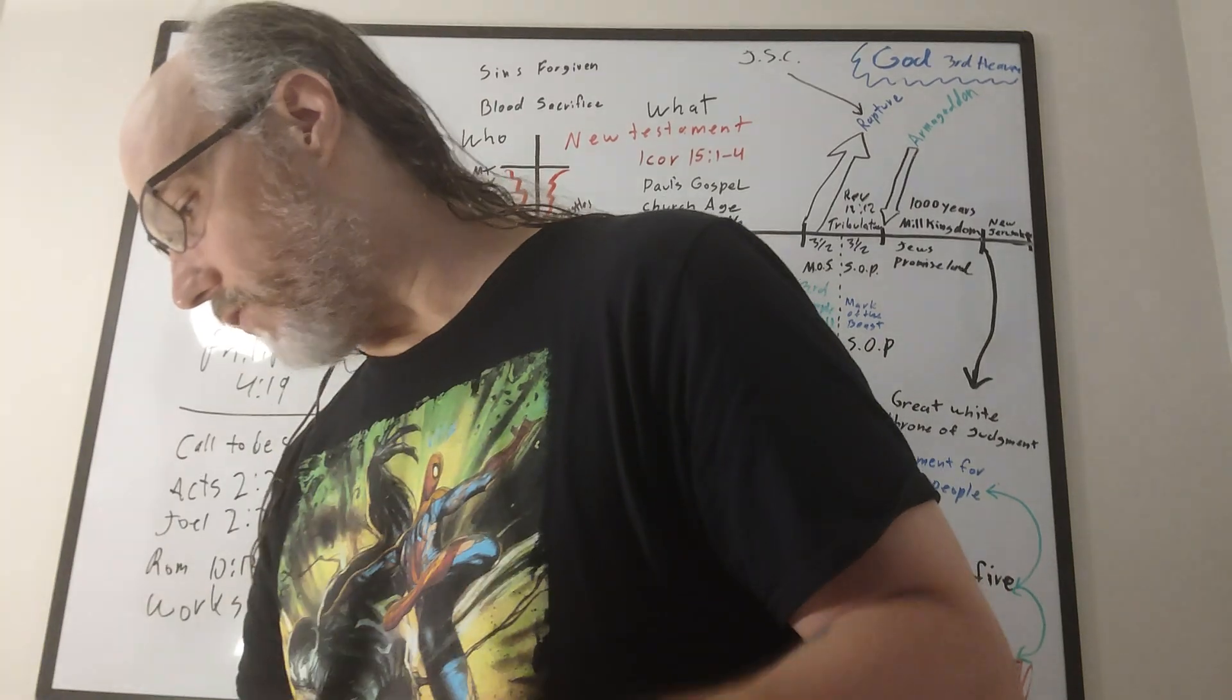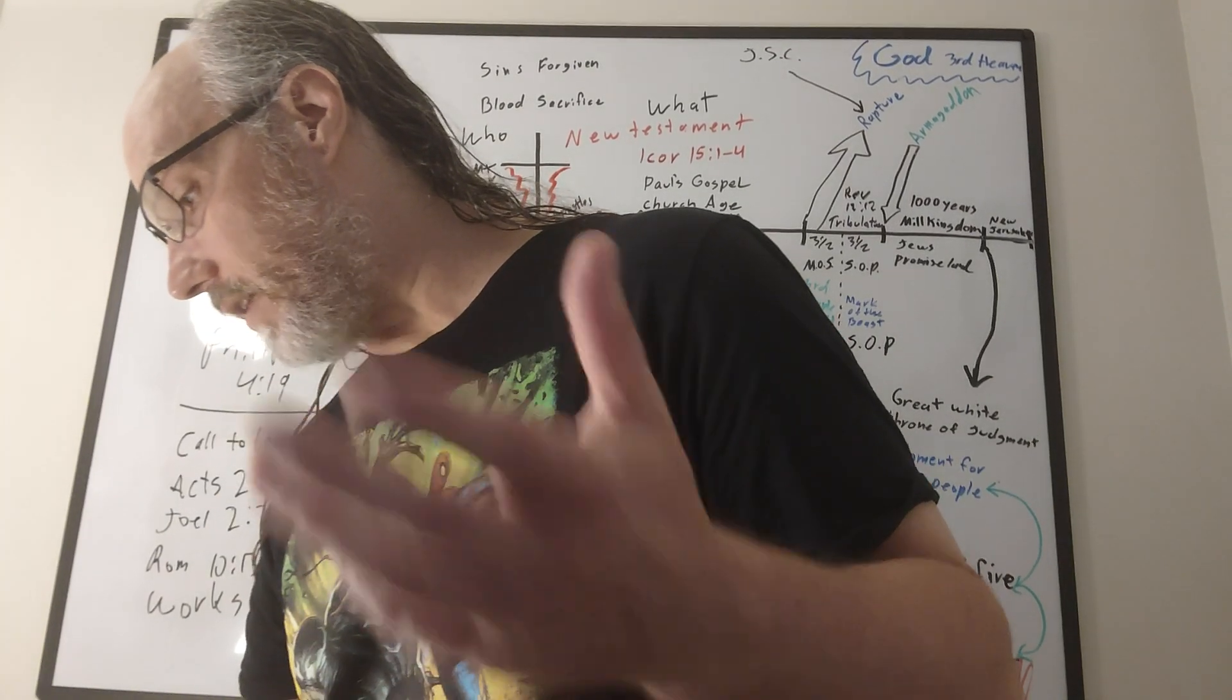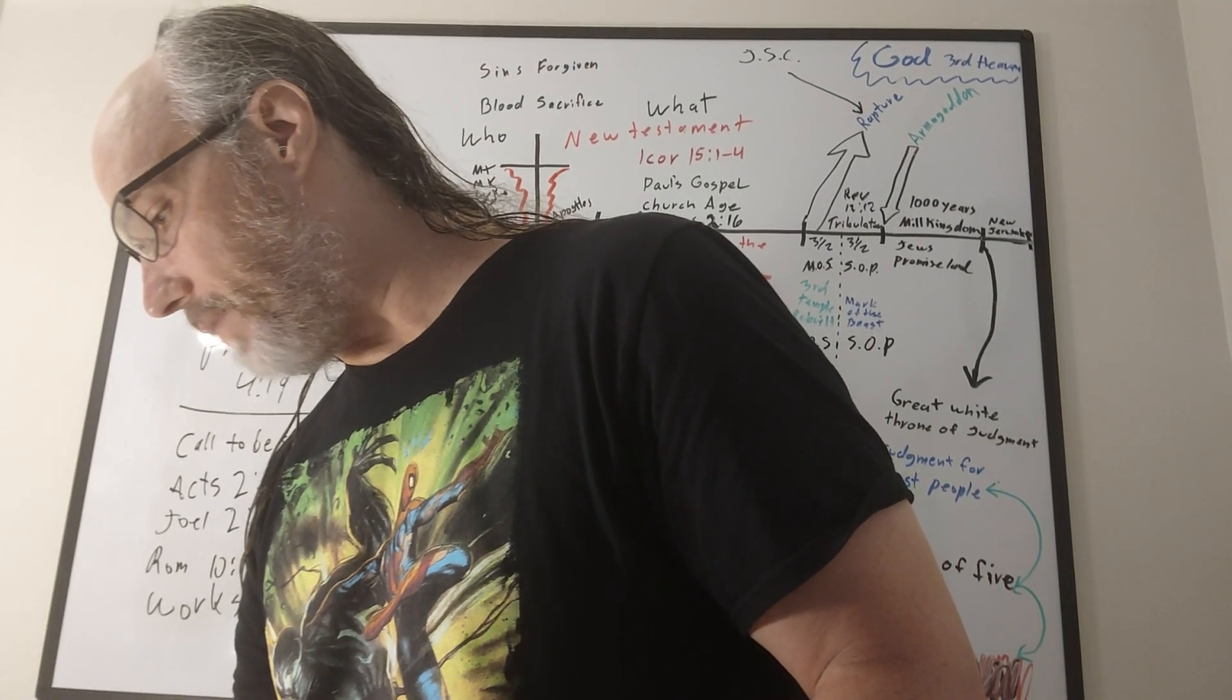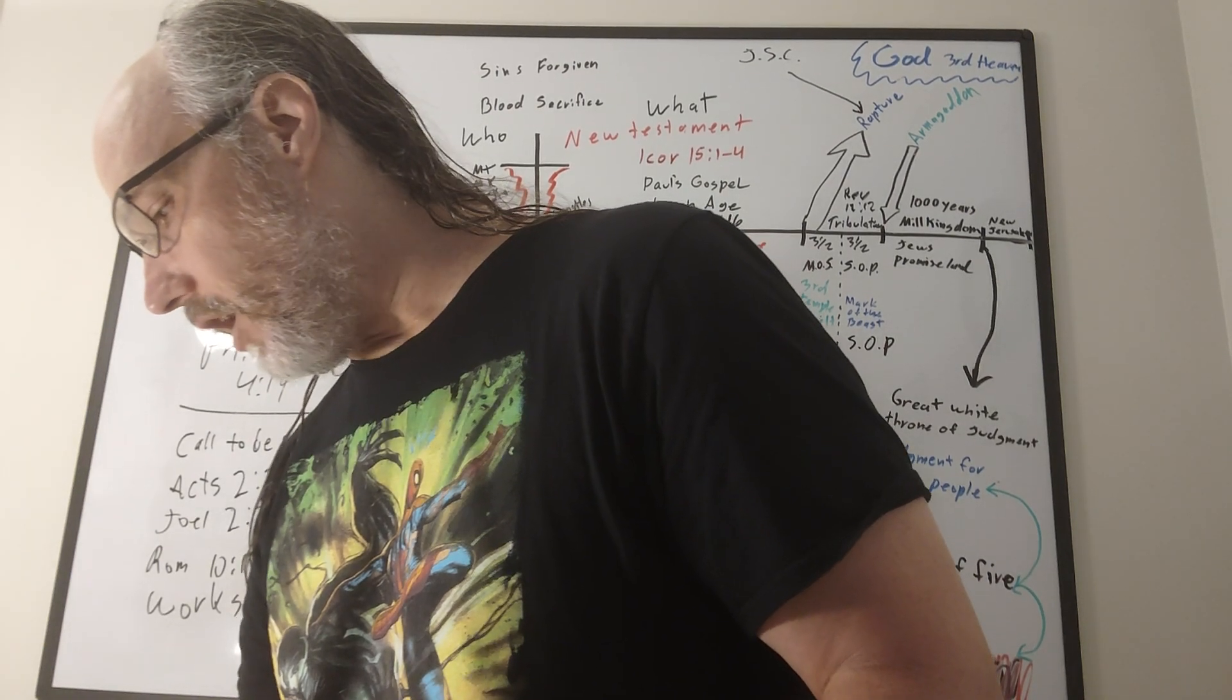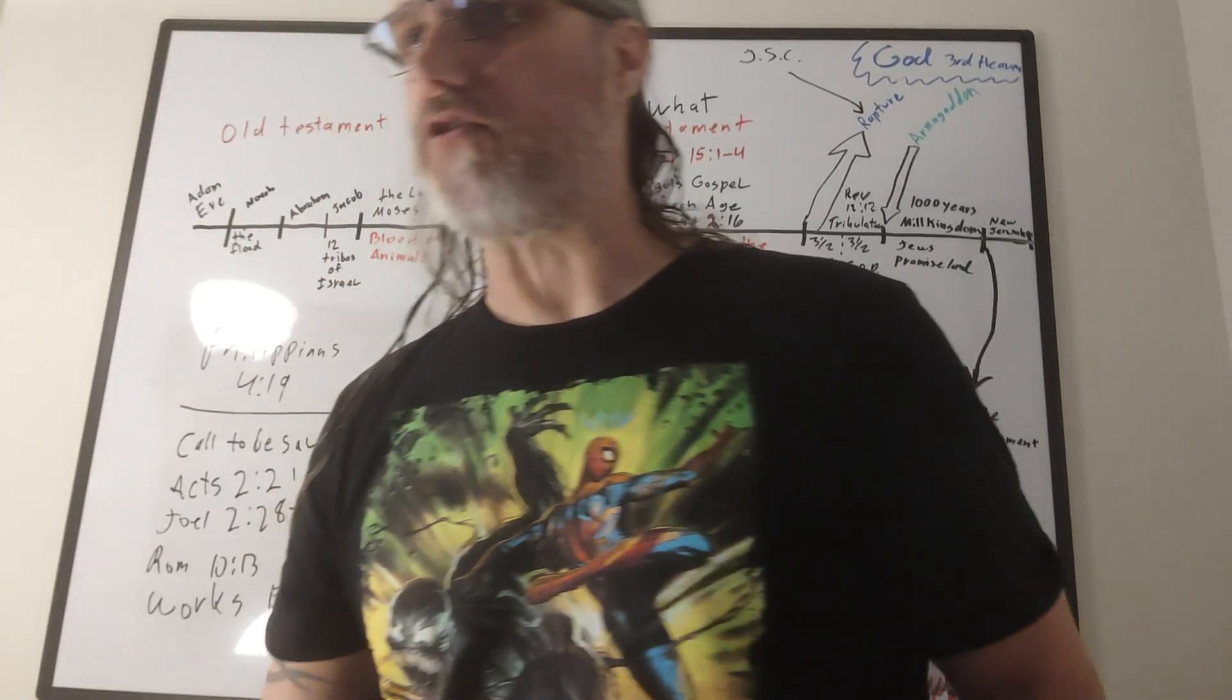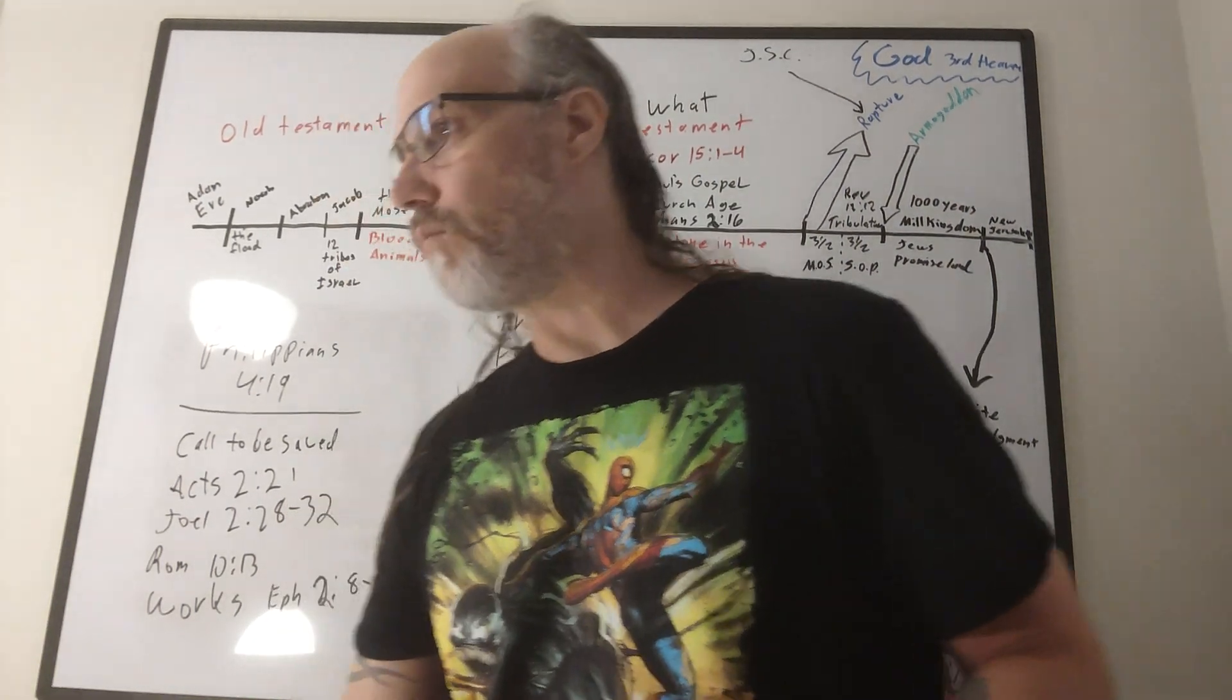And we see Joel talking about it and Joel is talking about end time events, future time, Joel chapter 2. And it says in verse 31 of Joel 2, it says, it shall come to pass that whosoever shall call upon the name of the Lord shall be delivered, delivered, saved, same thing. It says, for in Mount Zion and in Jerusalem shall be deliverance as the Lord has said and in the remnant whom the Lord shall call. And he's saying here in Zion, in Jerusalem, who's in Zion and Jerusalem? Jews. So this really has more to do with Jews.